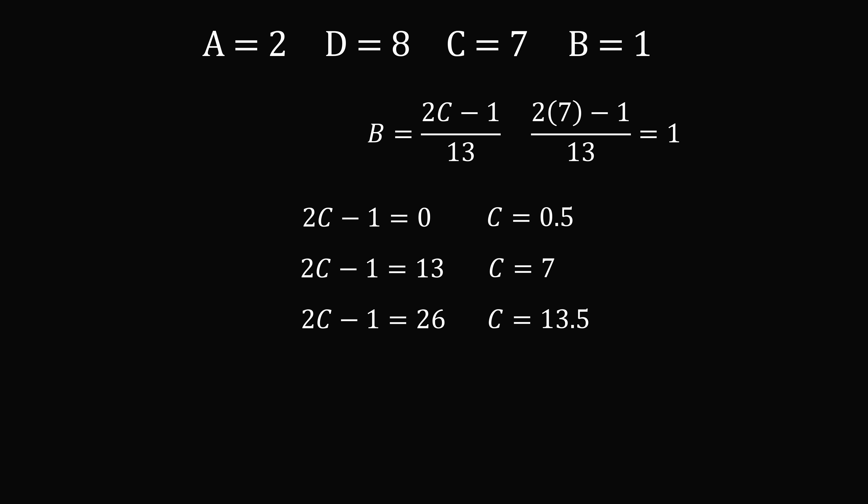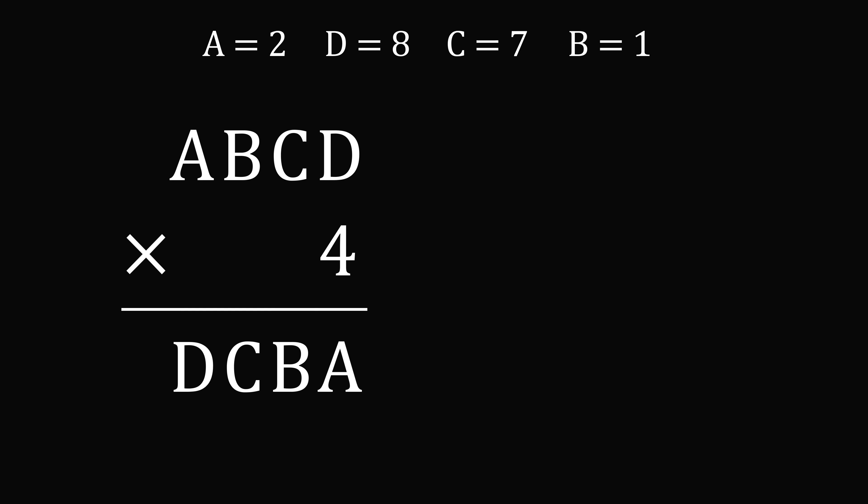So we figured it out. A is equal to 2, D is equal to 8, C is equal to 7, and B is equal to 1. We'll just go ahead and substitute this into our original puzzle, and we do in fact verify this is a solution. 2,178 times 4 is equal to 8,712. And that's the answer.